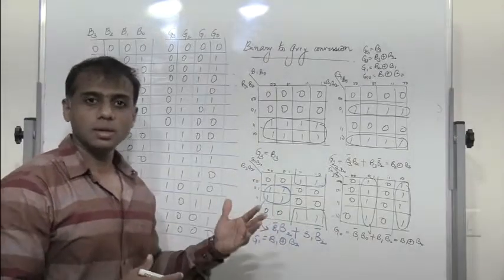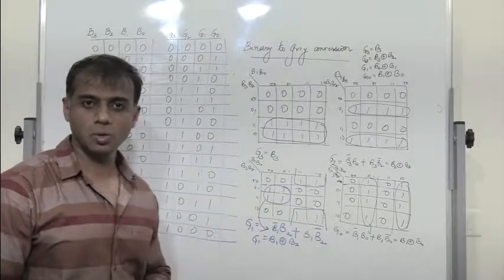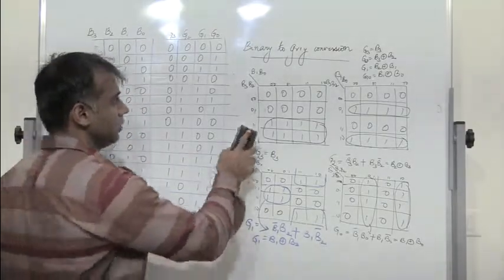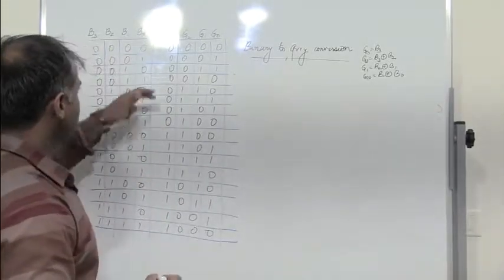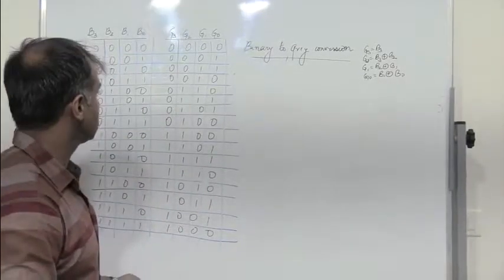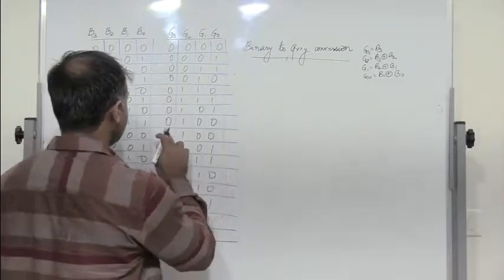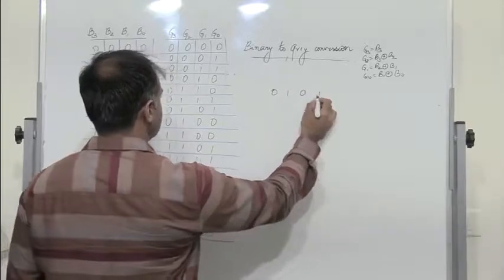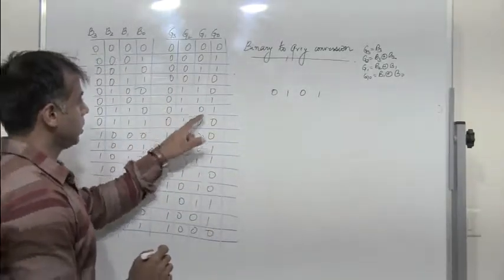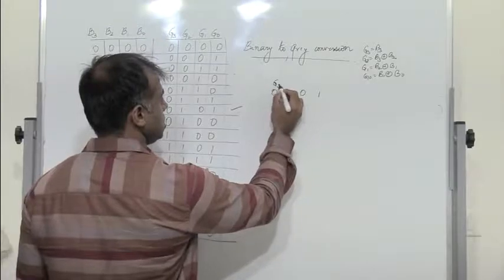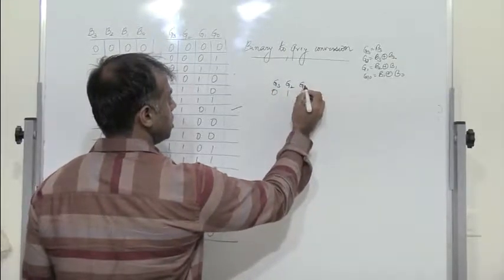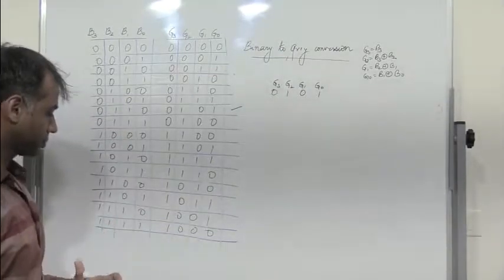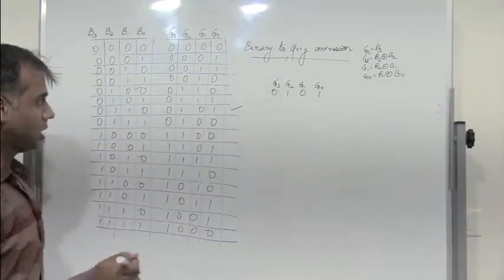Now, when a gray code is given — when you have a 4-bit gray code — how do I convert it back to binary? That's again very simple. Let us take any one of these combinations. I need to convert gray to binary. Let me take 0, 1, 0, 1 as the gray code: G3, G2, G1, G0. I need to get back 0, 1, 1, 0.